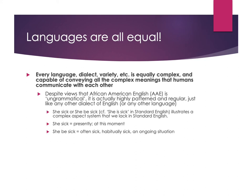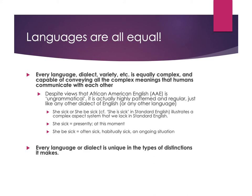Even though there are views that African-American English is ungrammatical or just slang, it's actually a very highly patterned and regular form, just like any other dialect of English. It even has aspects of grammar that we don't have in standardized English. For instance, there's a distinction between 'she's sick' and 'she be sick.' In standardized English we'd just say 'she is sick.' But 'she's sick' means presently at this exact moment she is sick, while 'she be sick' — using that unconjugated form of be — means it's a habitual action: she's often sick, habitually sick, an ongoing situation. To convey that in standard English requires additional words and context because it's not built into our grammar. Every language is unique in the distinctions it makes, but these differences don't make something better or worse.